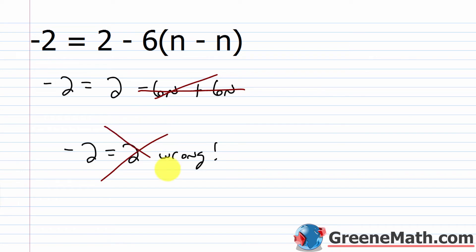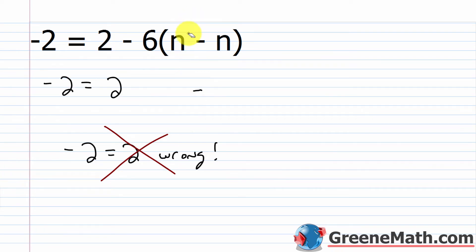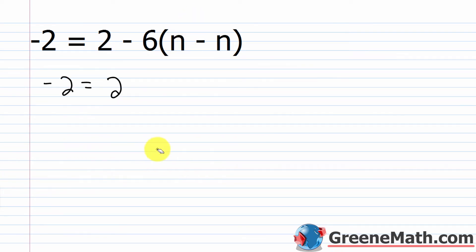Nothing is ever going to work here. If I plug something in for n, I subtract it away — result is 0 — so I'm always left with negative 2 equals 2 no matter what I choose for n. There's no value of n that can ever make this a true statement, so this is an example of a contradiction. When this occurs, write no solution.